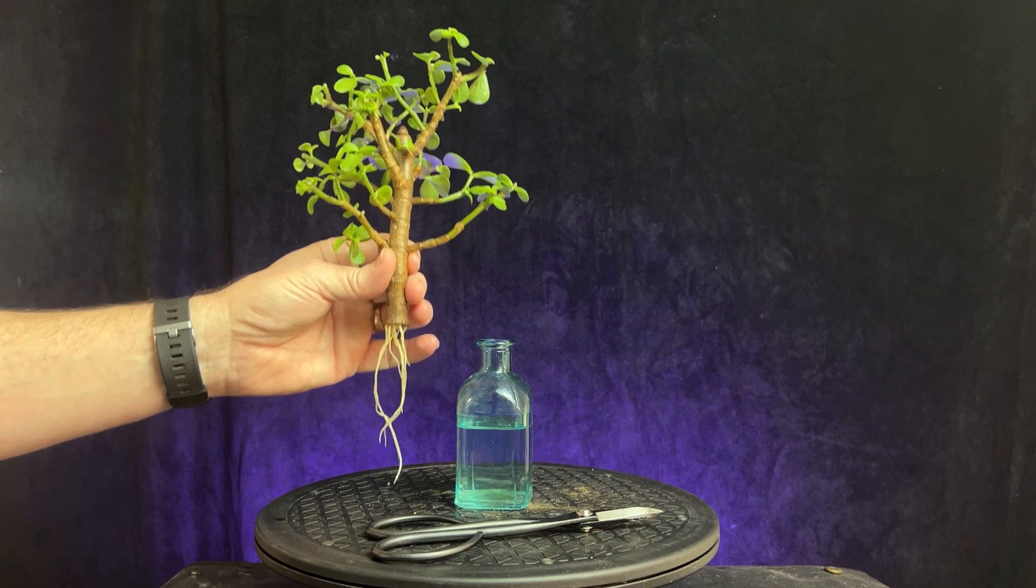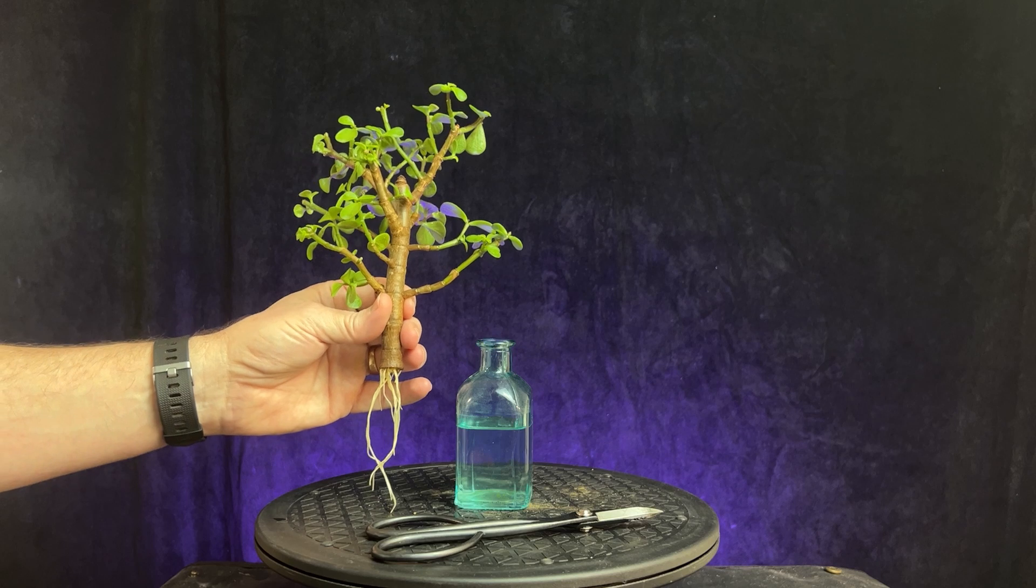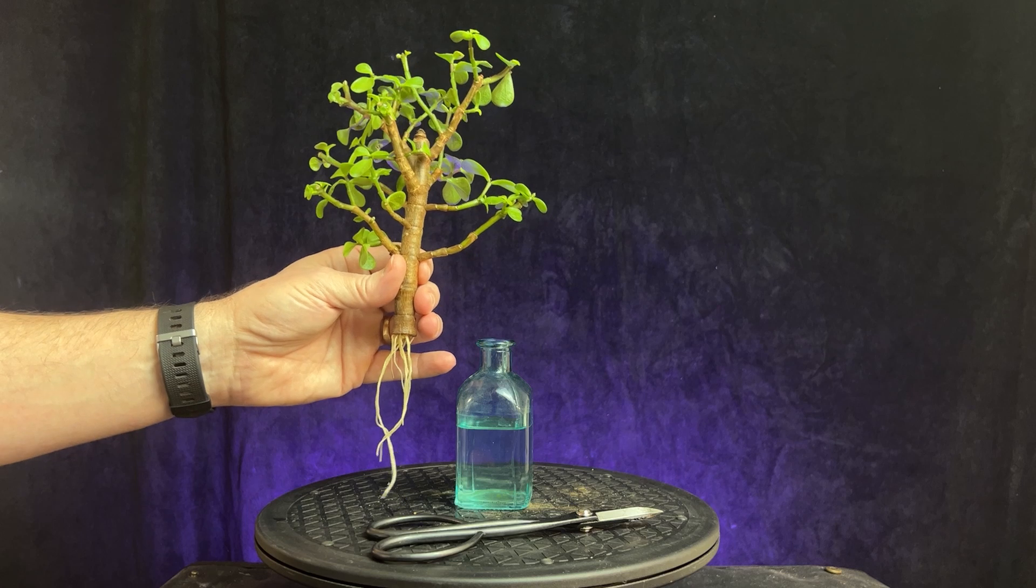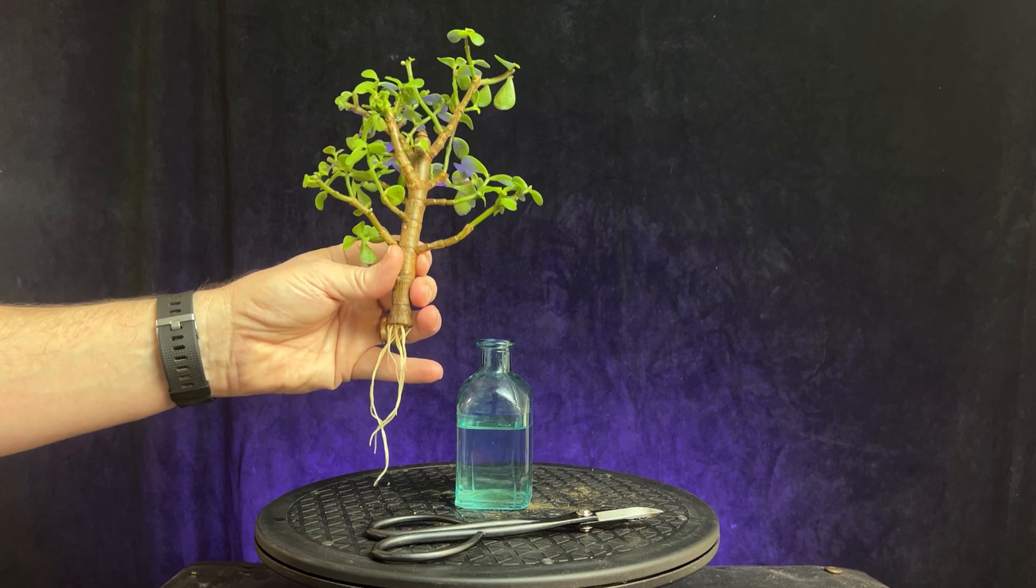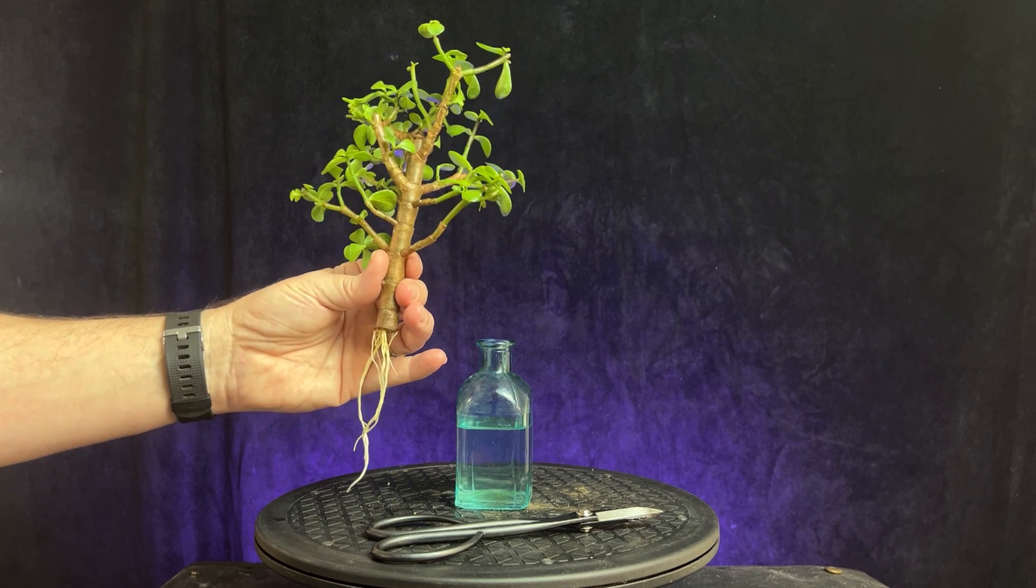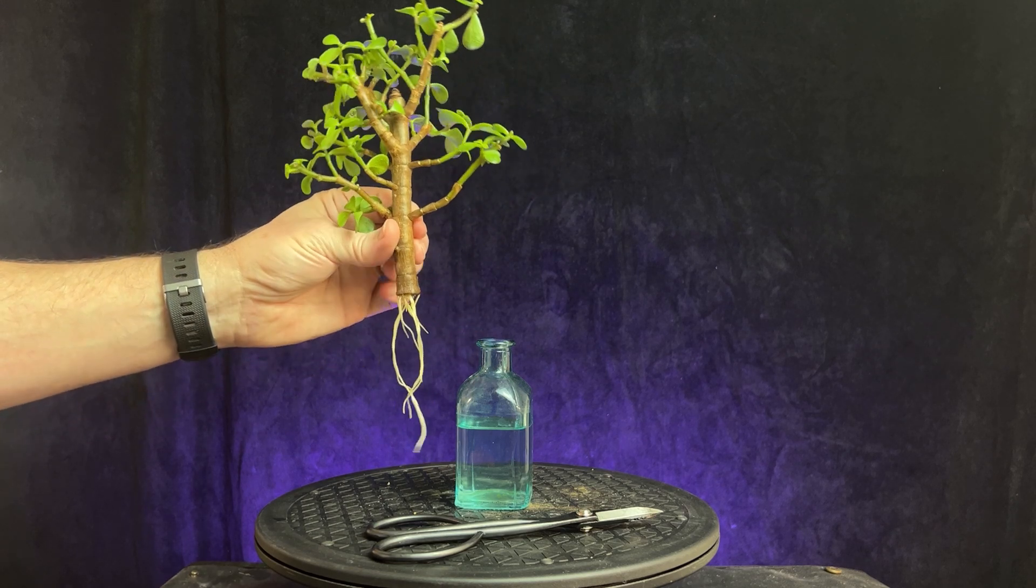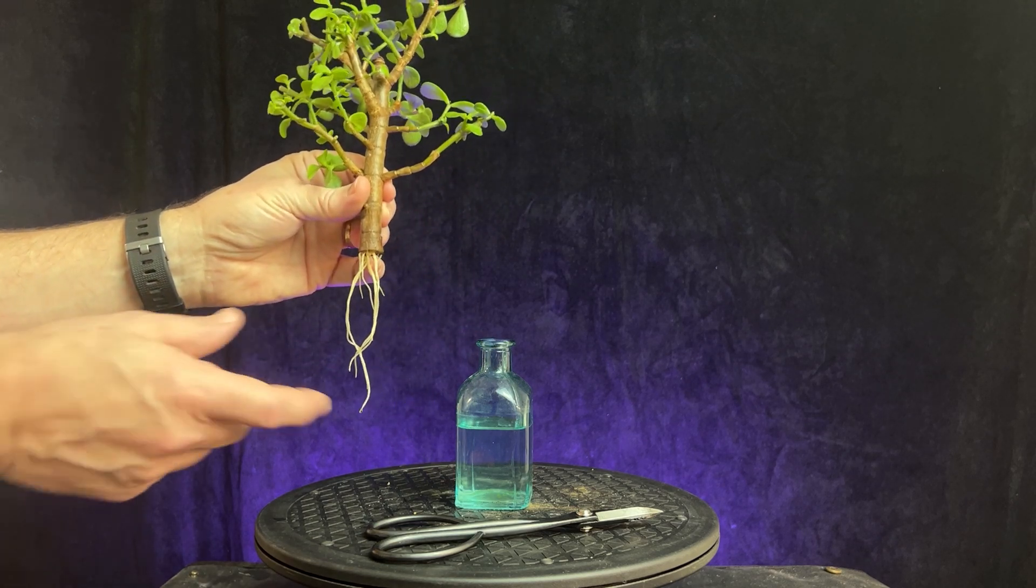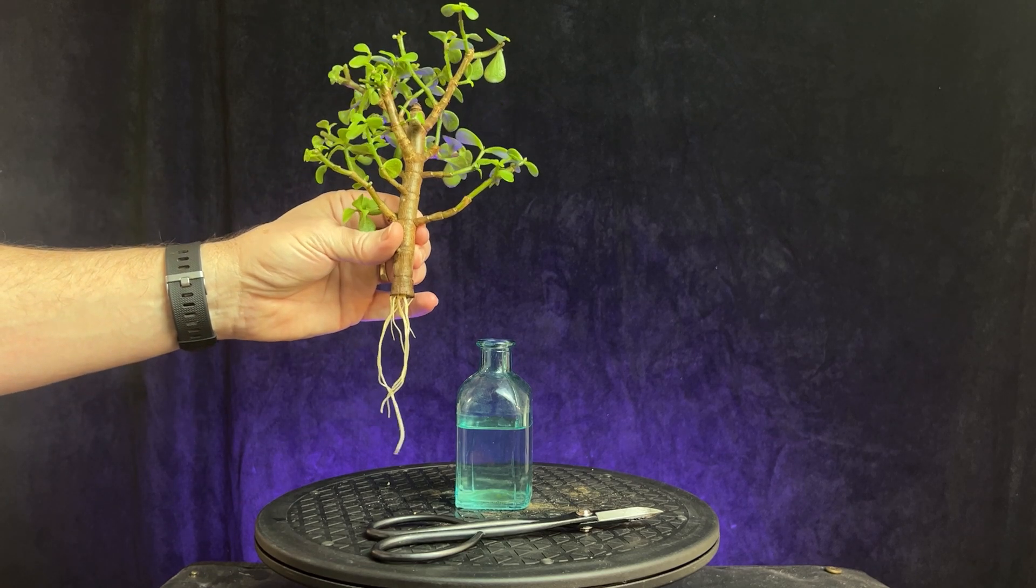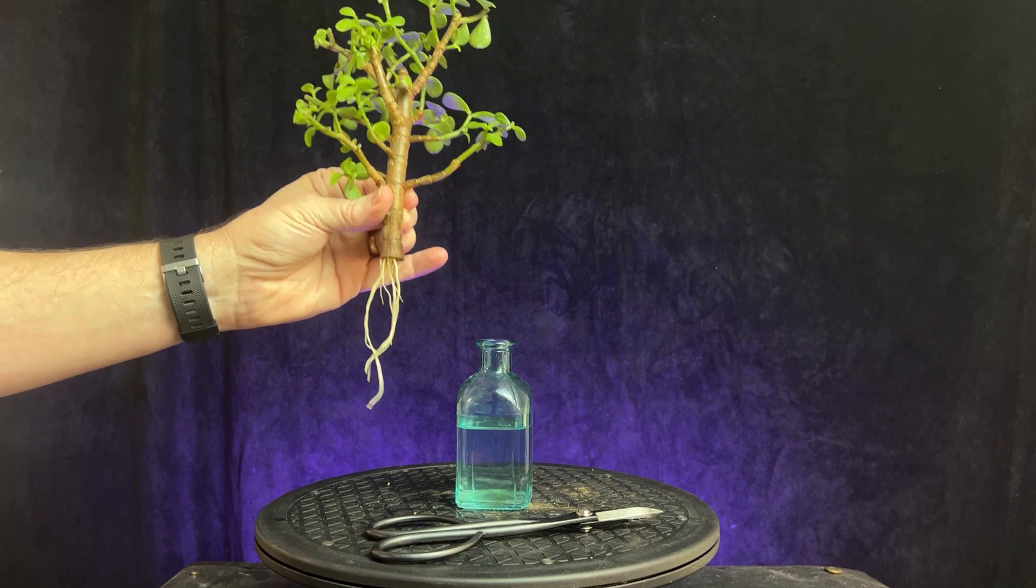I've tried to root some just in normal indoor air, which is around 68 to 70 degrees Fahrenheit and it takes them forever to root if they even do. Just that five to 10 degree temperature difference really causes the roots to pop and grow fast. These are probably three or four inches long in less than a month. So you can quickly have a new tree.